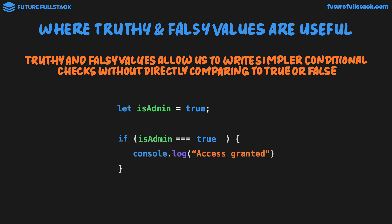Let's say we had this code here, which is checking if a user is an admin, and if they are an admin, we're going to grant them access to the admin panel. Up until now, we would write it like this: let isAdmin equal to true, and then an if statement where we're directly comparing the value of isAdmin to true using strict equality. The current value of isAdmin is true, so we have true strictly equal to true — which evaluates to true — meaning the code block "access granted" will run.